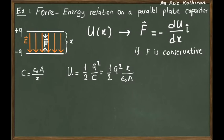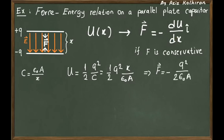Next, we apply the principle that the force can be expressed as the derivative of the potential energy. Taking the derivative of U with respect to x, the distance between the plates, we get: F = −q² divided by (2ε₀A).